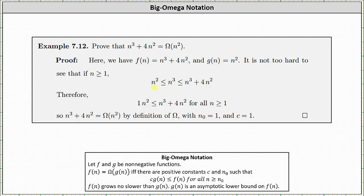Notice when n equals 1, n squared equals n cubed, which is less than n cubed plus 4n squared. And when n is greater than 1, n squared is less than n cubed, which is less than n cubed plus 4n squared. You may want to try some different values of n just to verify this inequality. From this inequality, it follows that 1 times n squared is less than or equal to n cubed plus 4n squared for n greater than or equal to 1, which indicates n cubed plus 4n squared is equal to big omega of n squared by definition of big omega, with n sub zero equal to 1 and c equal to 1.